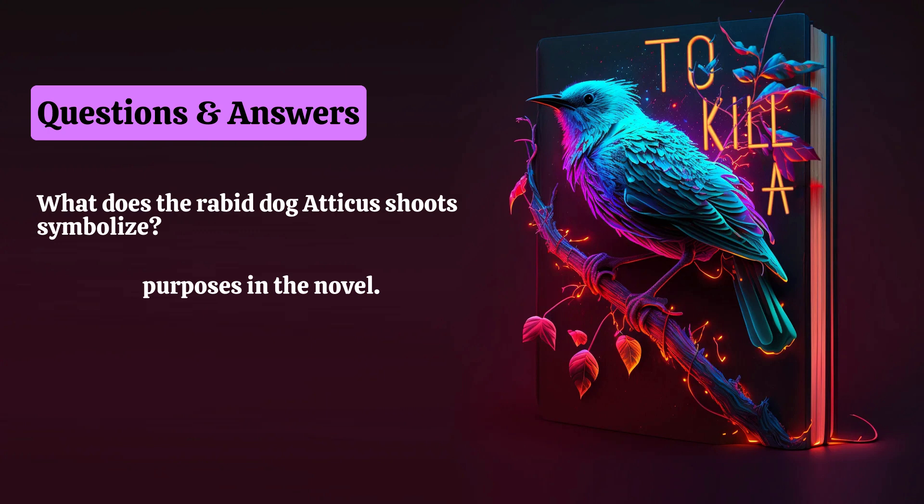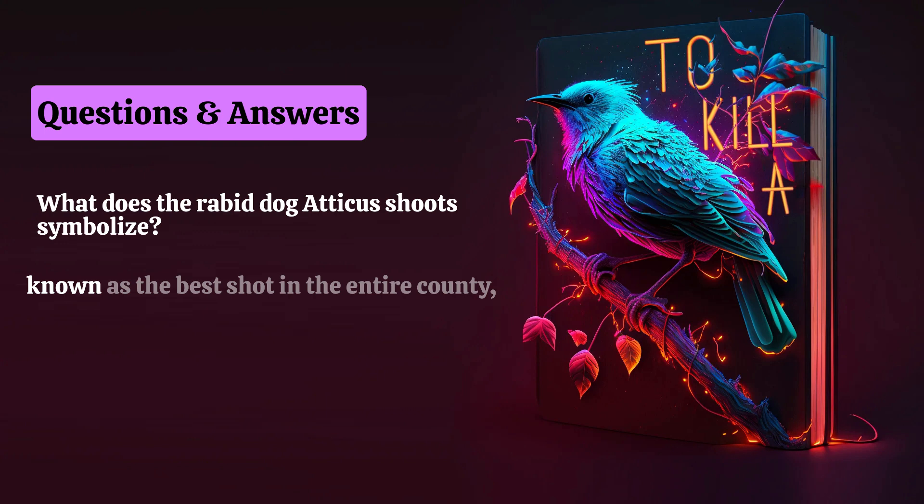Before the incident with the dog, Scout and Jem saw their father as old, reserved, and not particularly powerful. When Scout and Jem learn that their father is known as the best shot in the entire county, they learn to see Atticus with a greater sense of respect.